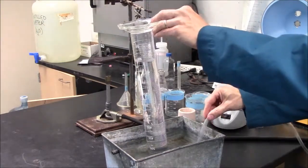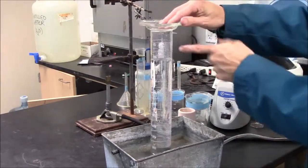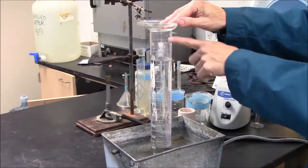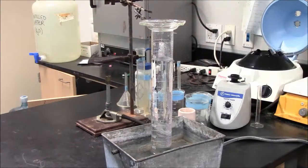To find the volume of gas collected we remove the tube from below and simply take the difference from where it began to where it ended. And this difference is the volume of gas produced in the reaction.